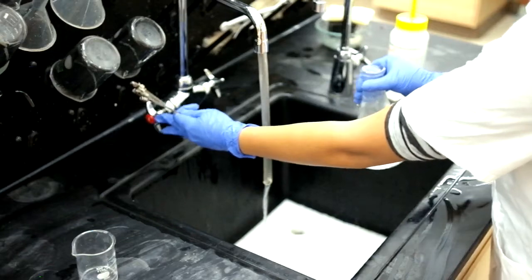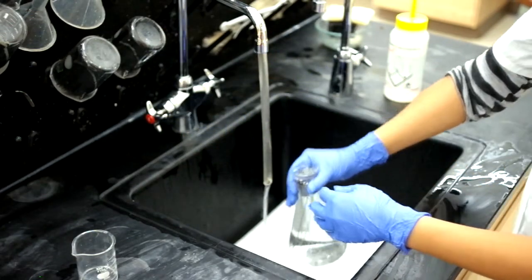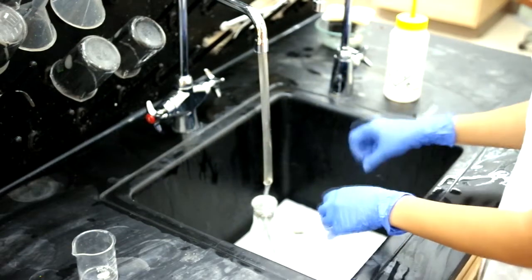Select the clogged needles, place them into an Erlenmeyer flask and run hot water for several minutes to soften the solid residues inside the needles.